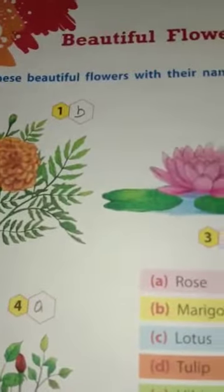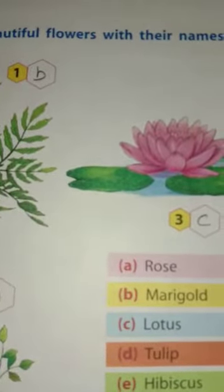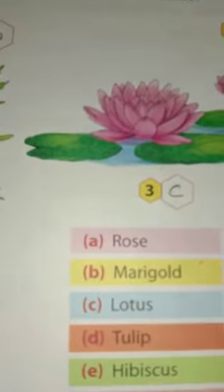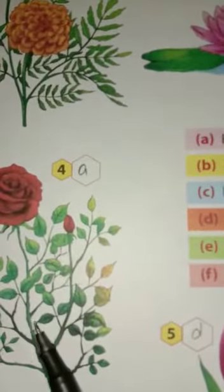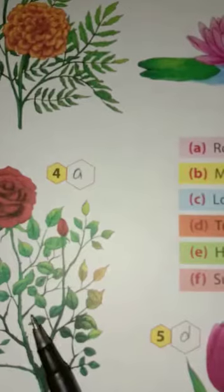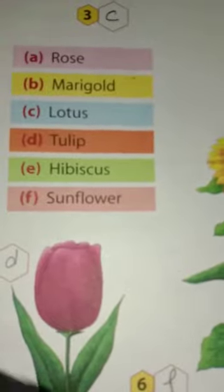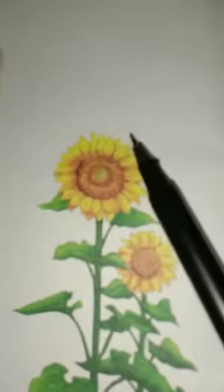Our fourth chapter is beautiful flowers. Here are some different beautiful flowers with their names: the first flower is marigold, second is hibiscus, third is lotus, fourth is rose, fifth is tulip, and the last one is sunflower.